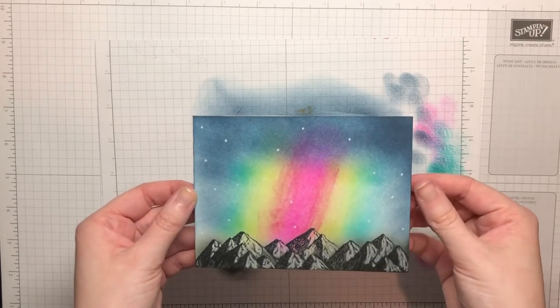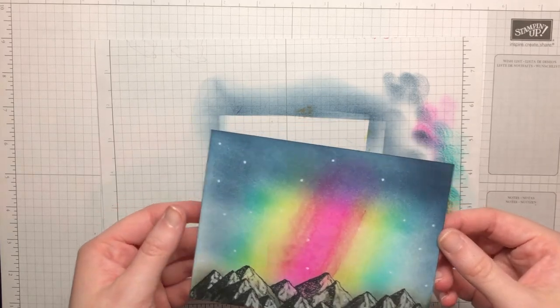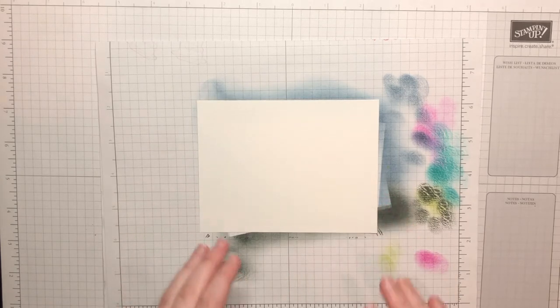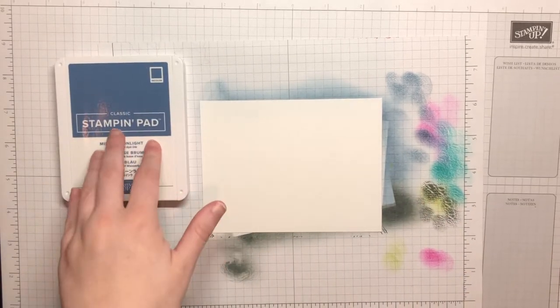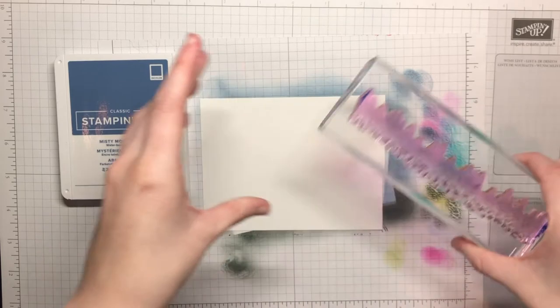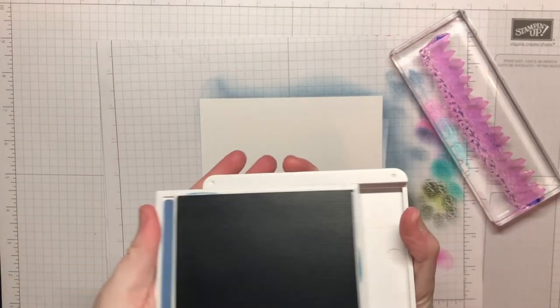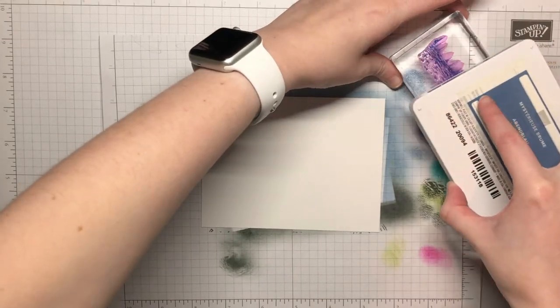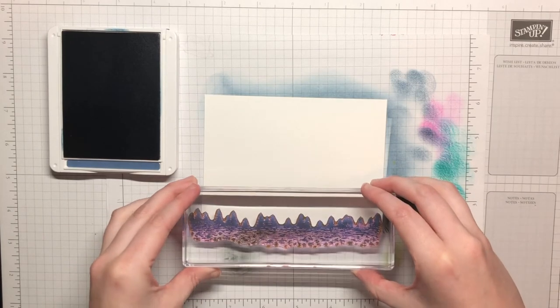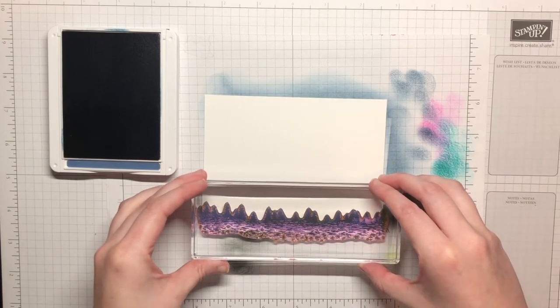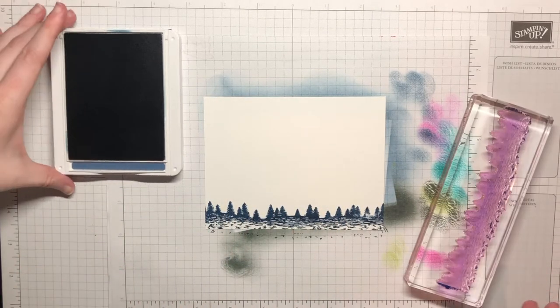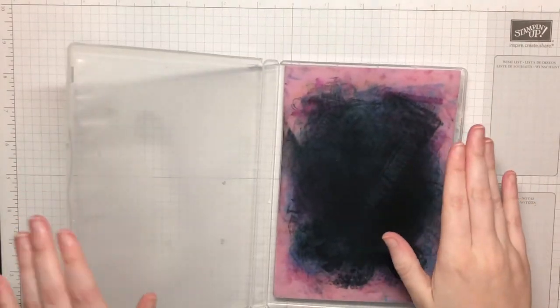I just want some of that ink to dry especially up here before I go ahead and add the sentiment on. And while that dries I've got the biggest piece of basic white here and this is for the inside of the card. So I'm going to be using the Misty Moonlight ink along with this tree stamp. So we're going to go ahead and ink this up and then I'm going to go ahead and line this up at the bottom and I want to make sure it comes off of both sides just to give it a seamless look here and stamp that down.